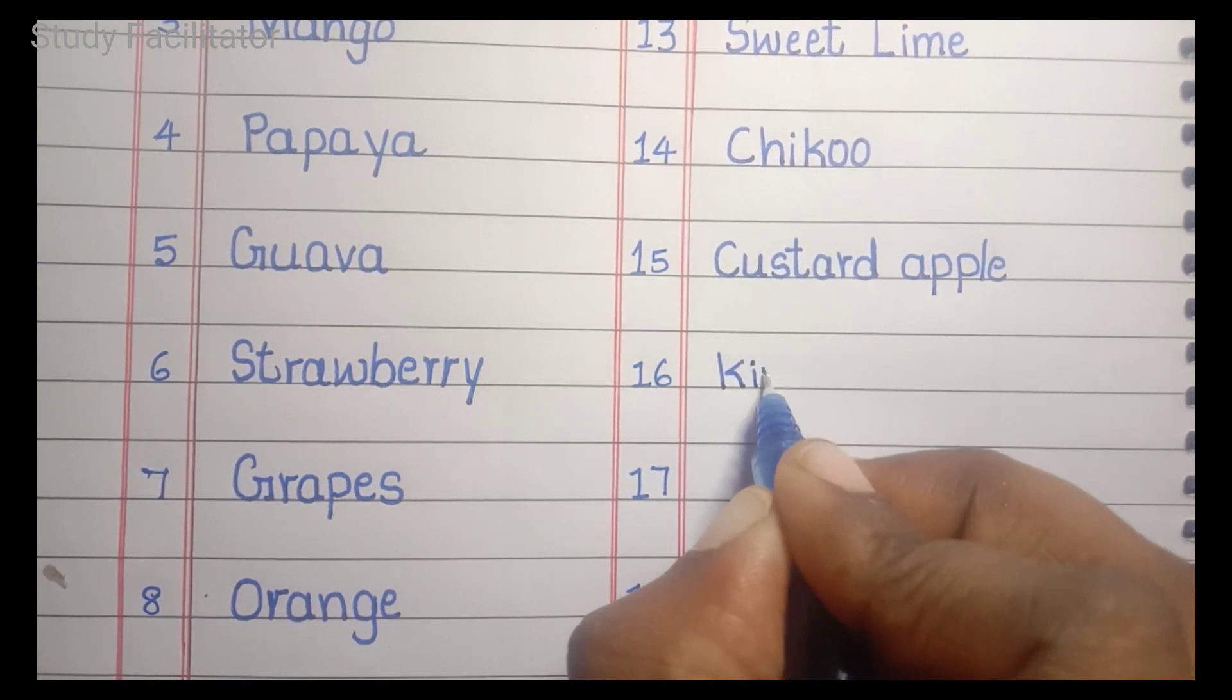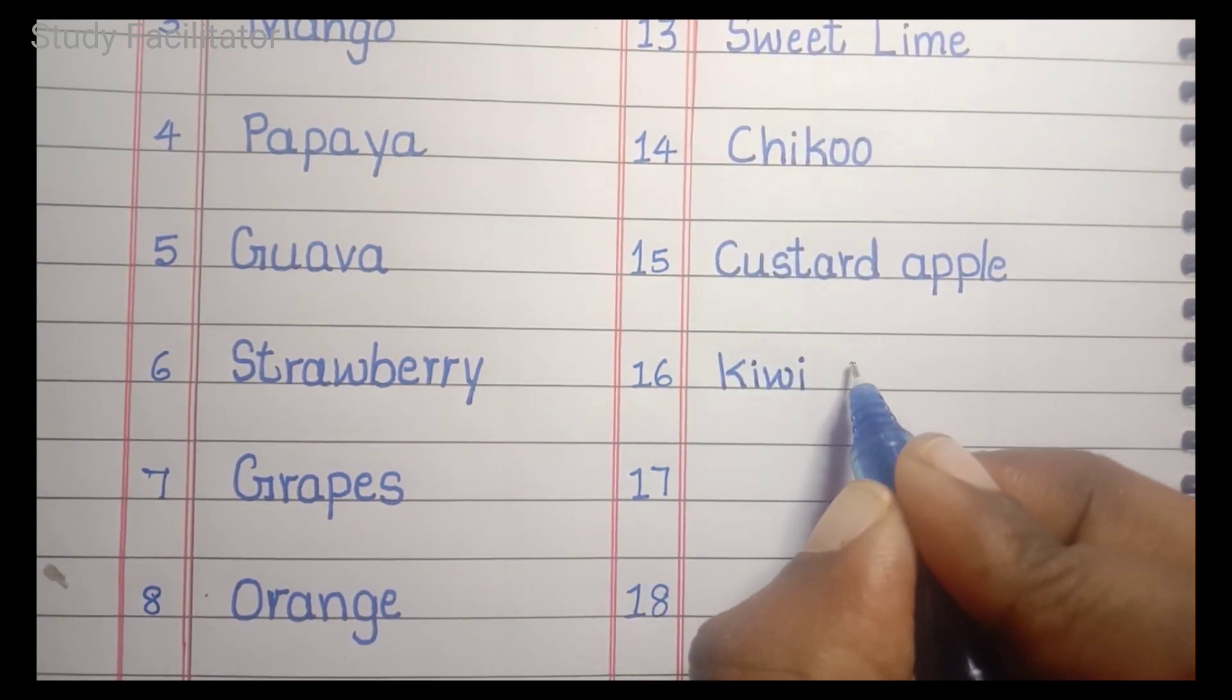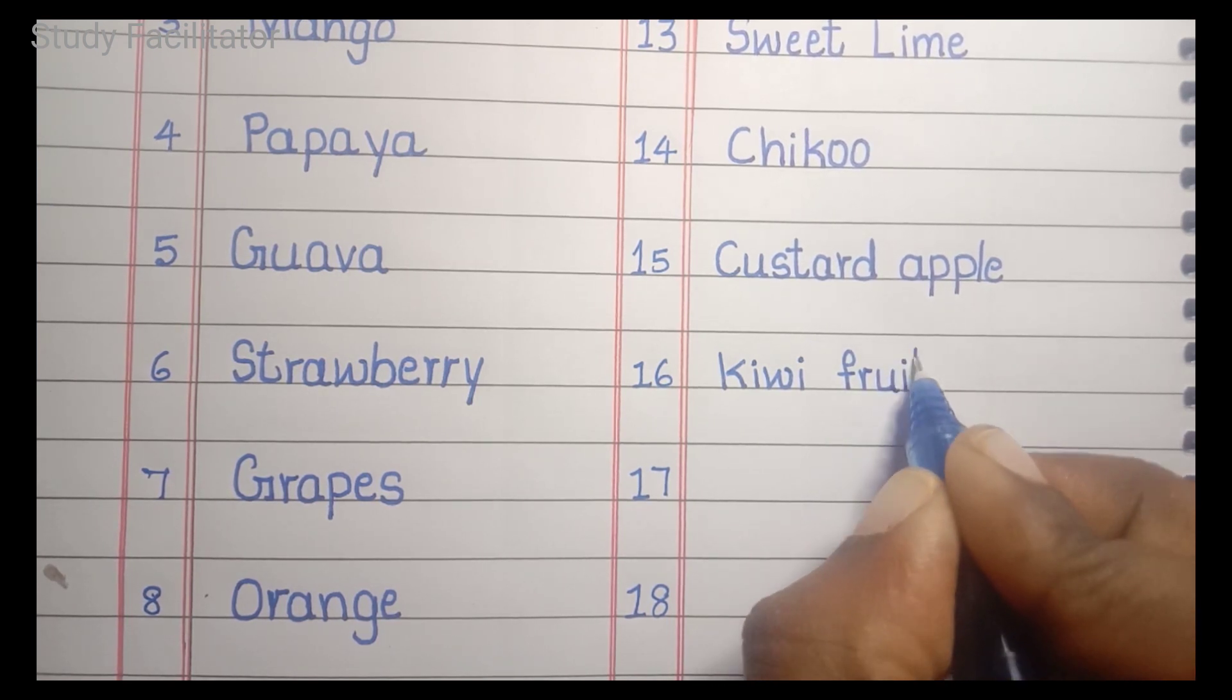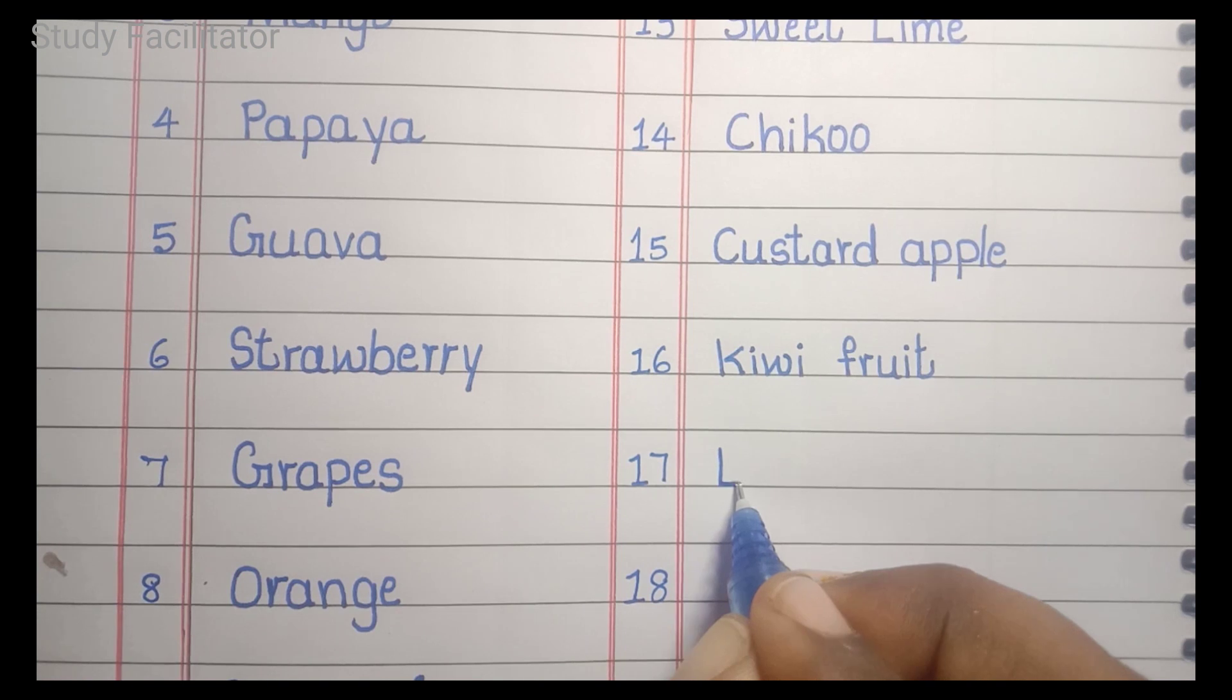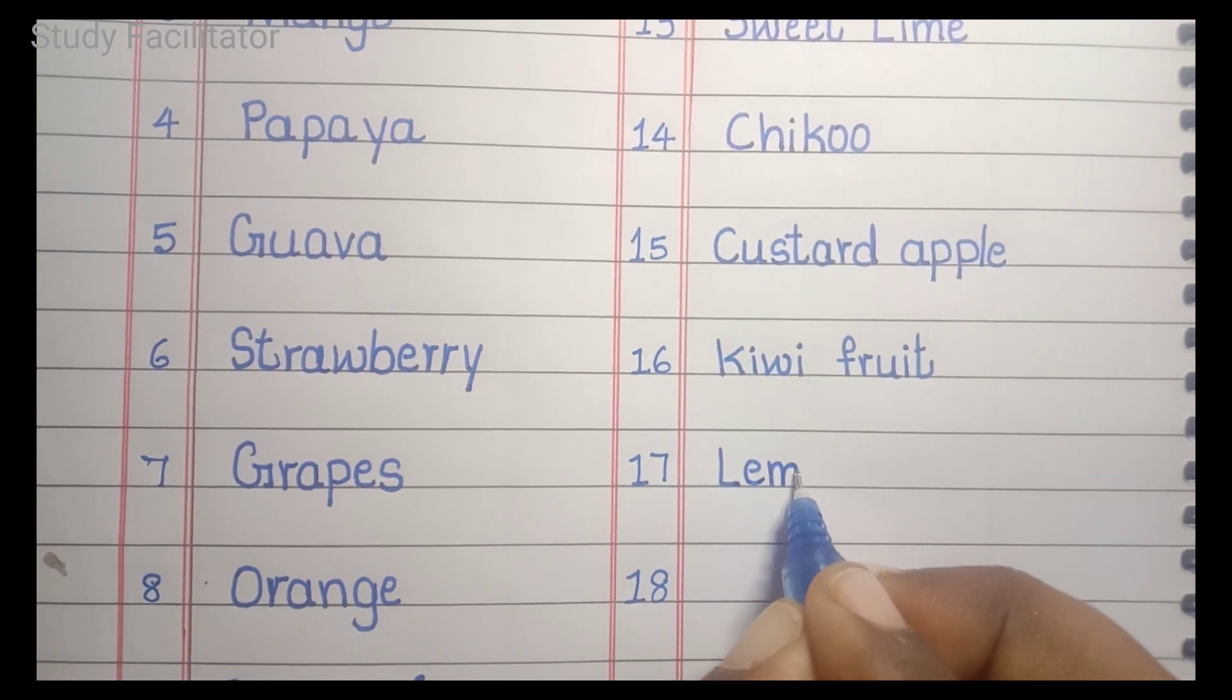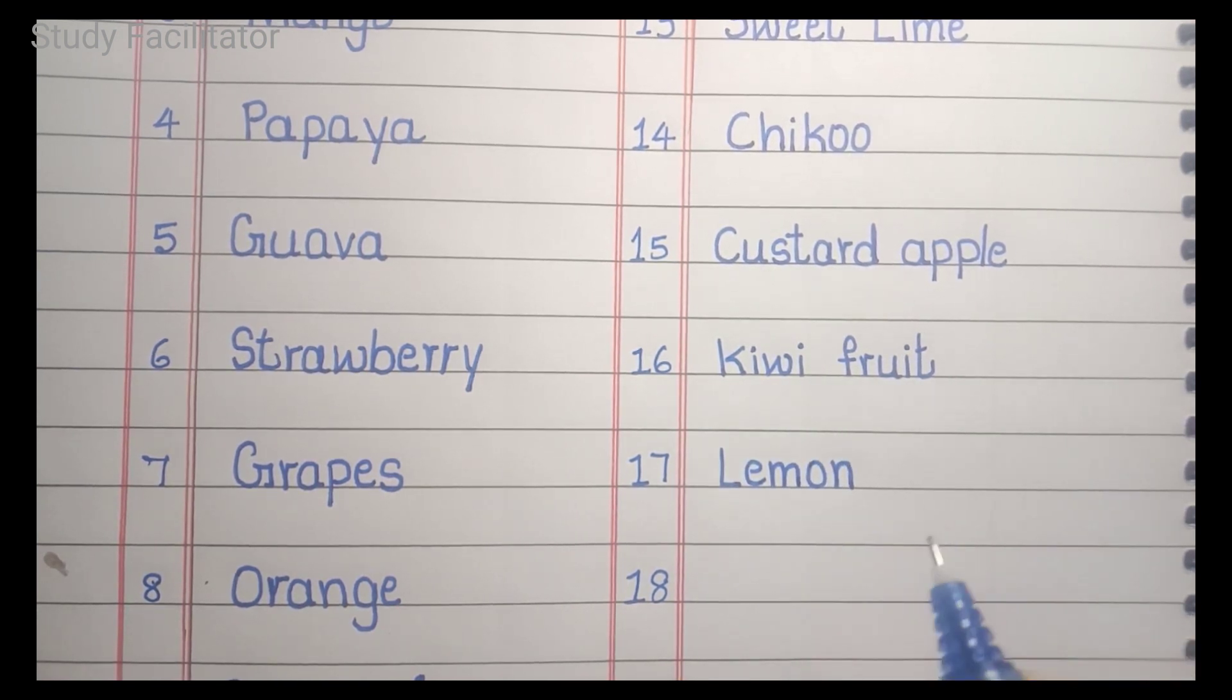Kiwi fruit. K, I, W, I, F, R, U, I, D. Kiwi fruit. Lemon. L, E, M, O, N. Lemon.